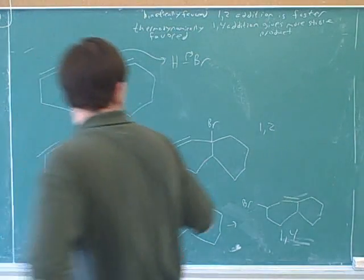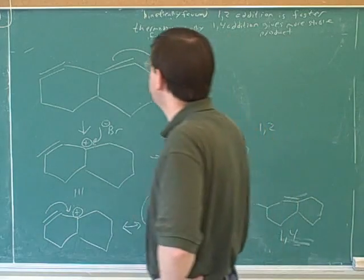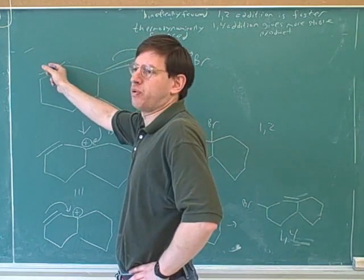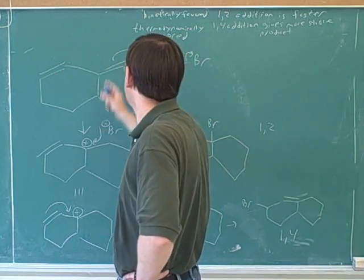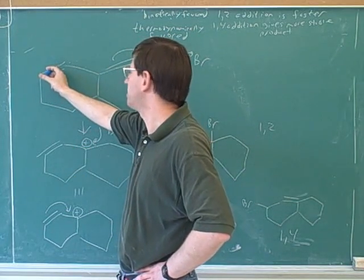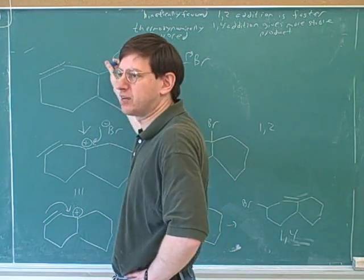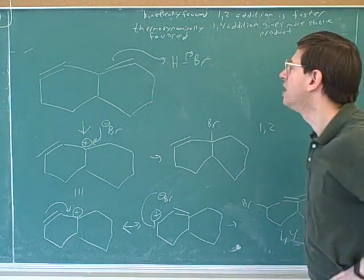All right, and you showed correctly that this was the 1,2 product and this was the 1,4 product. Now, originally, why did you have this double bond attack and not this one? Well, that was the right decision, because by using this double bond to attack, you were able to form a tertiary carbocation, whereas if we had used this double bond to attack, that would not have formed the tertiary carbocation, so it was better to use this double bond to attack. That was a good thing to notice.